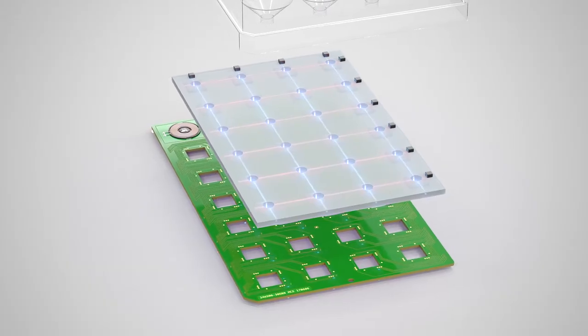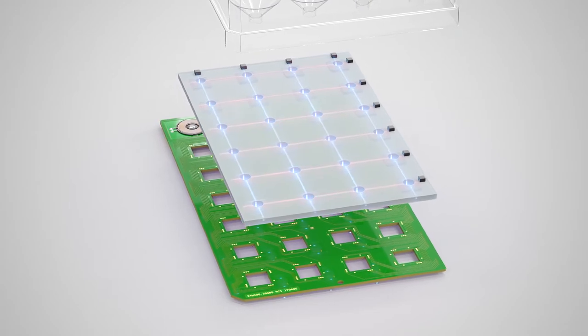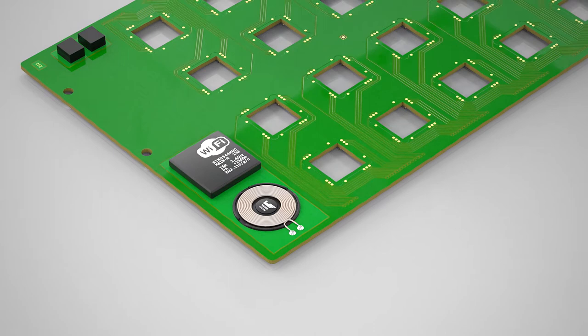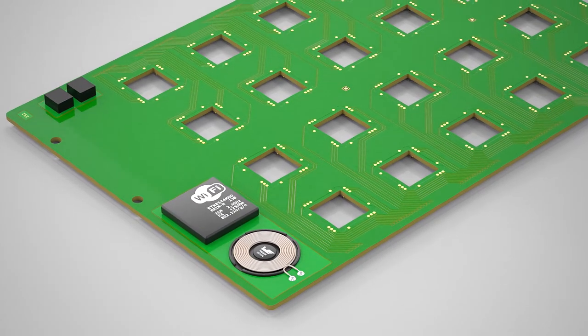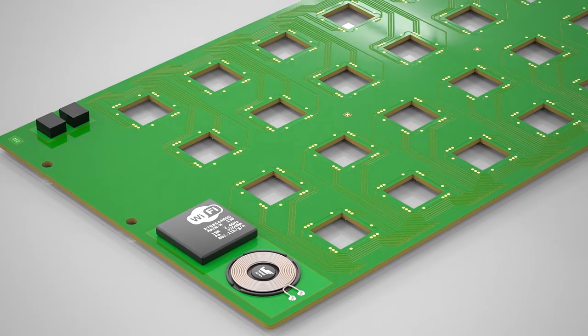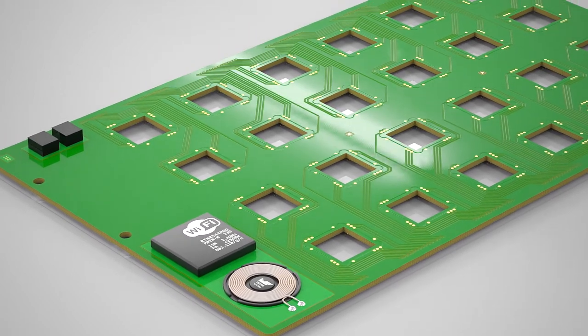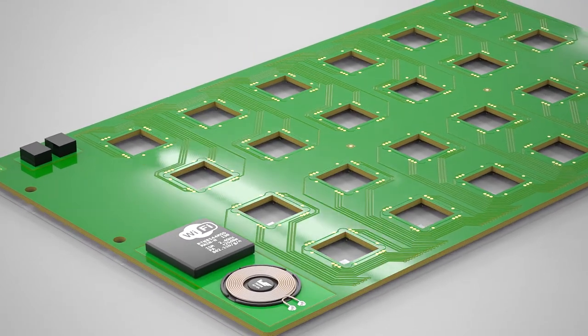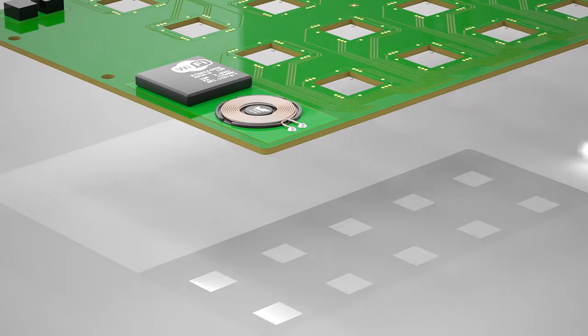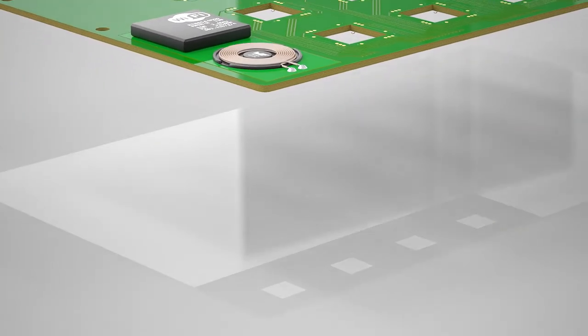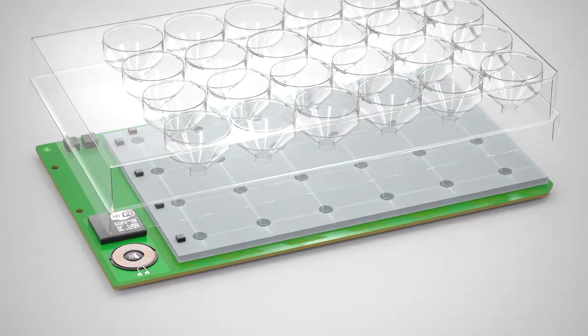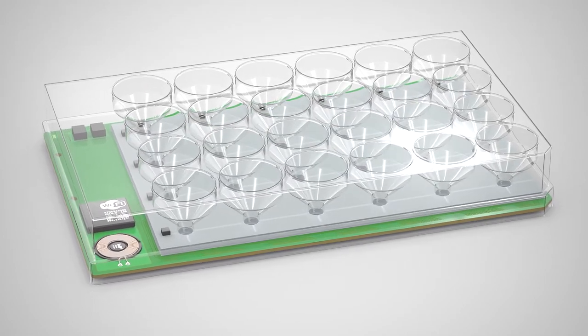The fluid carries nutrients or pharmaceutical agents to the organ-on-chip devices and removes waste products. A printed circuit board contains electric circuitry, wireless connectivity and wireless power control. The transparent bottom cover enables microscopy from below. The whole device is hermetically sealed so that it can be safely used in incubators.